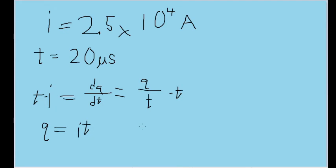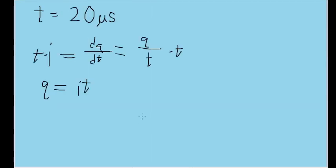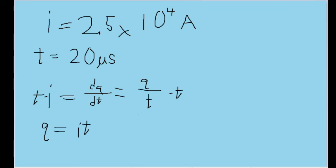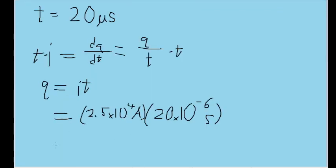Let's now plug in our values for the current and time into the formula, also making sure to convert microseconds into seconds. And here's our formula. Plugging this into our calculator, we find an answer of 0.5 coulombs.